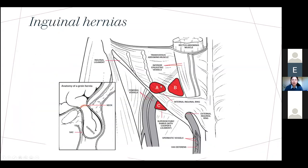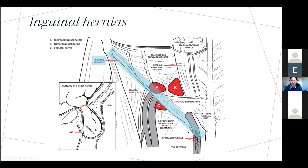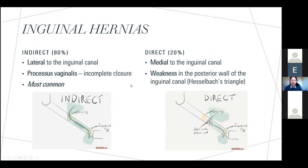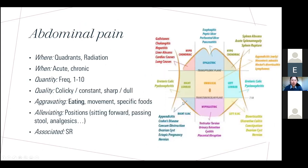For inguinal hernias: direct hernia is medial to the inferior epigastric vessels — remember 'DIM: Direct Is Medial.' Indirect hernia is due to incomplete closure of the processus vaginalis. Direct hernia is due to weakness of the posterior wall — typically an older man with chronic coughing. This was literally the first question in our exam last year and about 50% of us got it wrong.